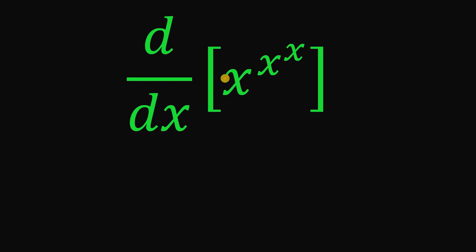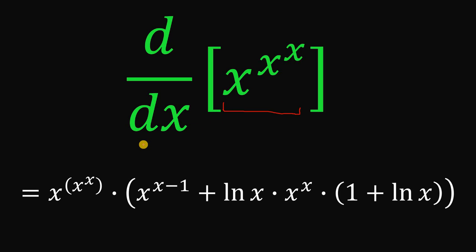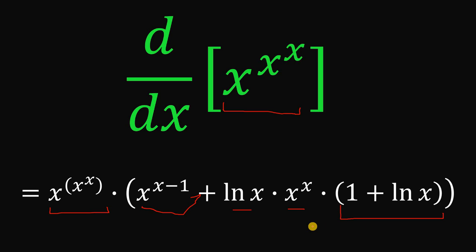Our goal in this question is to find the derivative of x raised to x raised to the power of x. Before we show the solution, here is the answer: x raised to x raised to x, multiplied by the quantity x raised to x minus 1, plus ln of x times x raised to x times the quantity 1 plus ln of x. Now the question is, how do we get this derivative? Here's the solution.